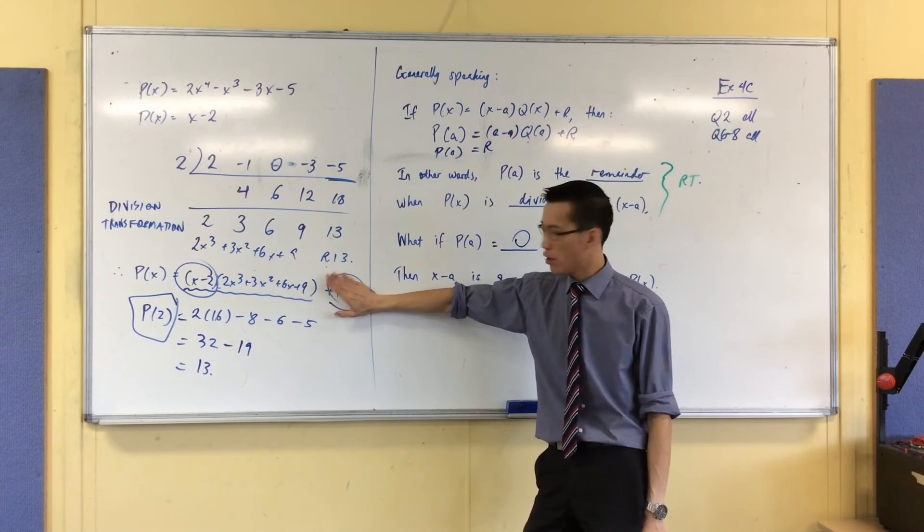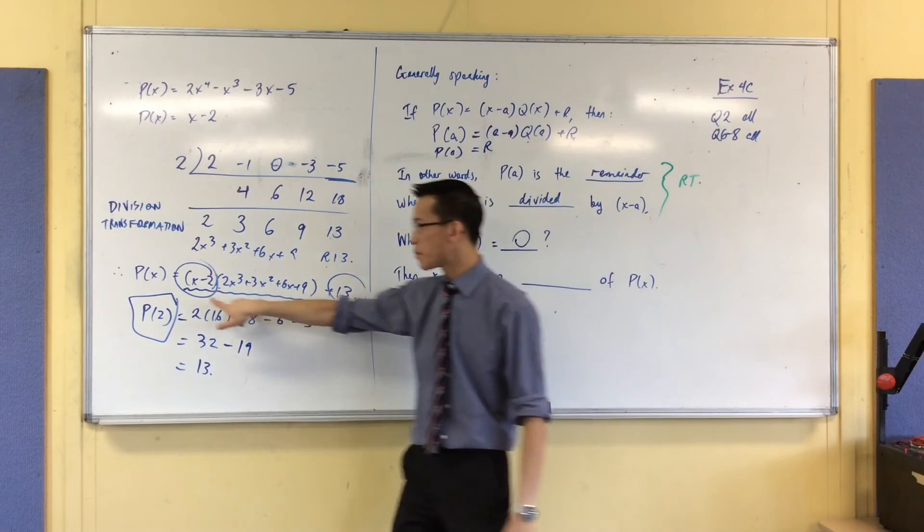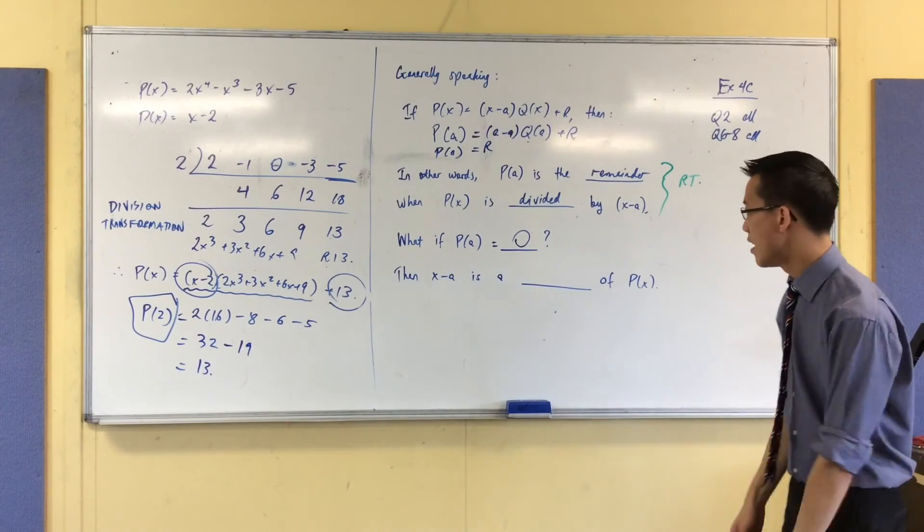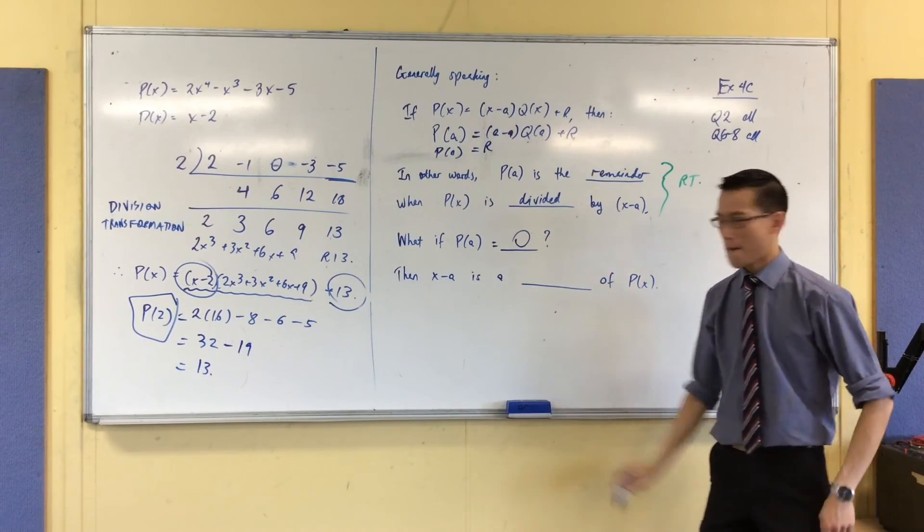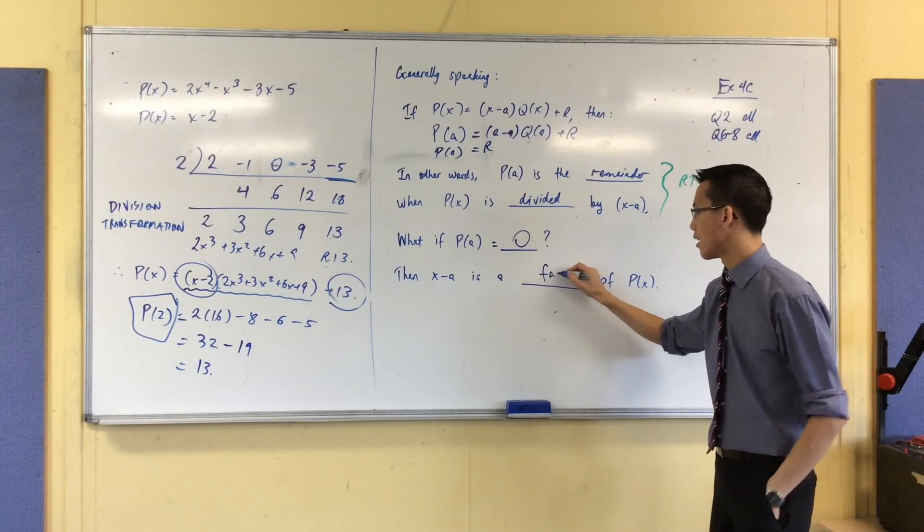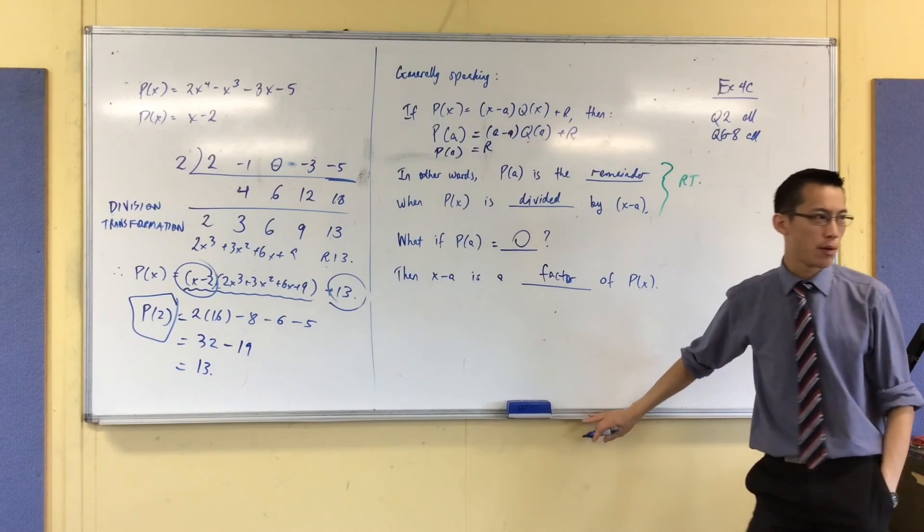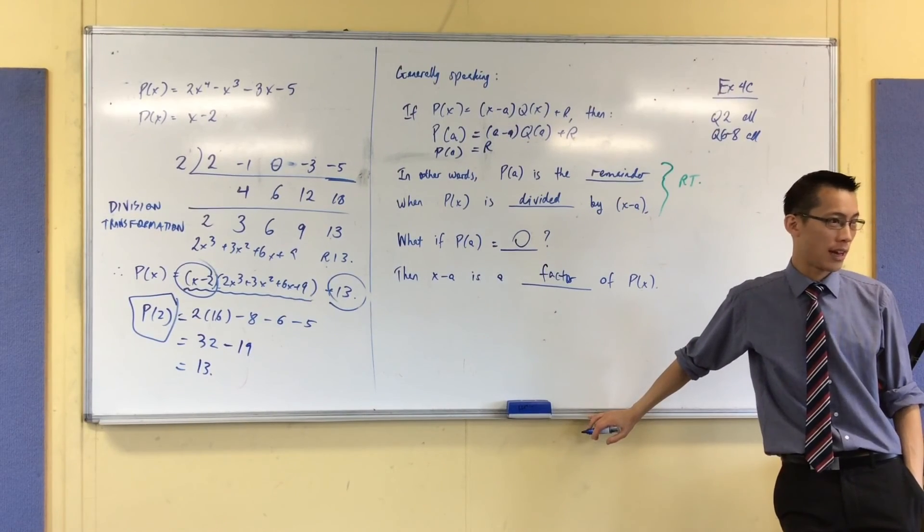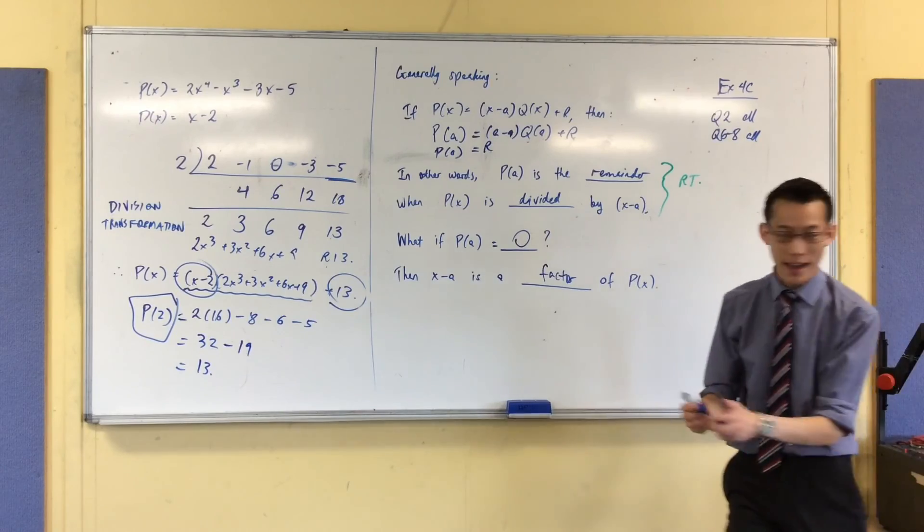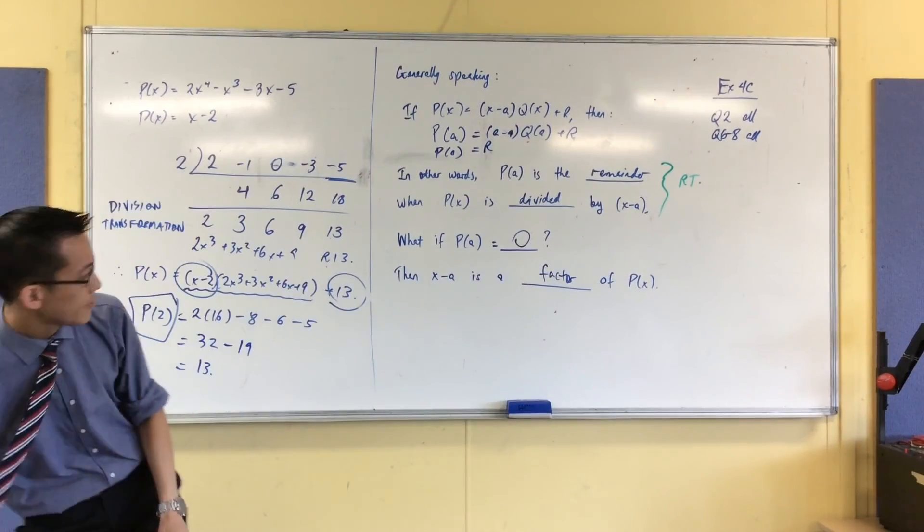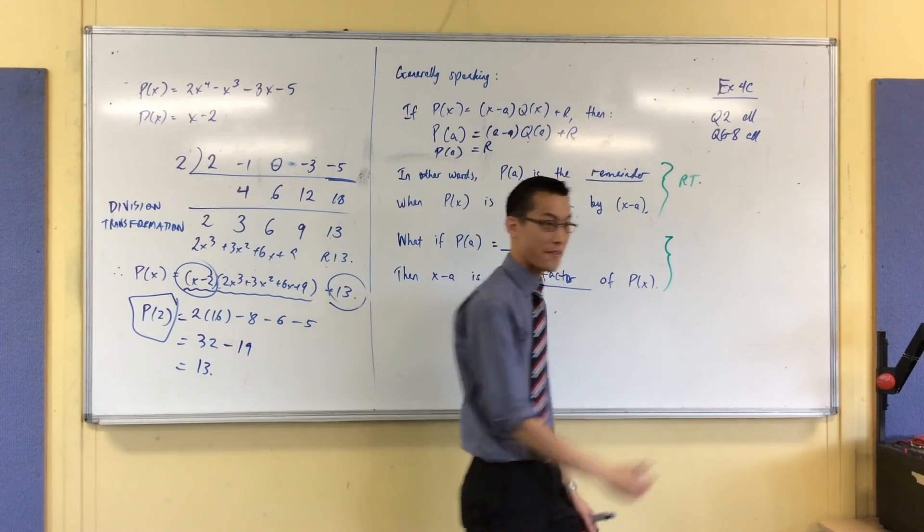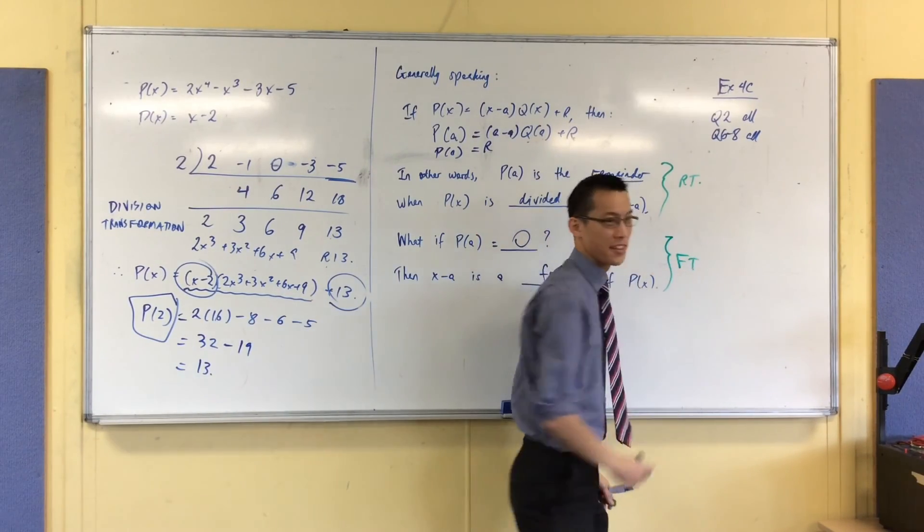In other words, you don't have some guy hanging off the end. You've got a perfect factorization. Everything sits nicely. So, if the remainder is 0, then x minus a is not just some random divisor. It's a factor of the actual polynomial that you started with. If you can divide through and successfully get no remainder, then you have a factor. And that's why this last bit here, because it's not just about remainders, it's about factors, it's called the factor theorem.